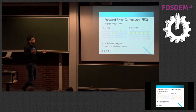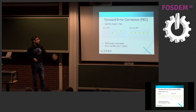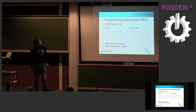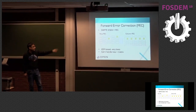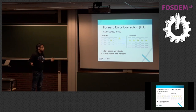What do people use currently? Really basic 1990s technology: forward error correction. SMPTE 2022-1 is an example — it's built around packet groups in rows and columns. Row FEC corrects packets lost across a row, and column FEC corrects packets lost in a column using a simple XOR operation. The biggest problem is those matrices have bounded size, and you can't handle any loss larger than the matrix.